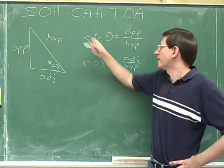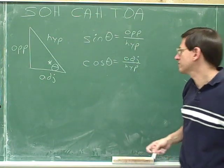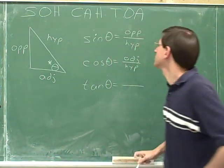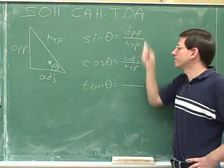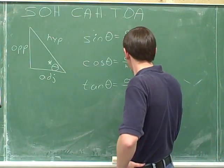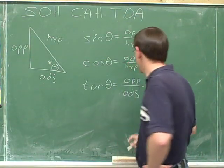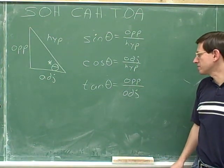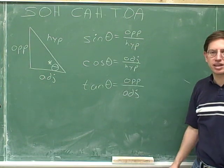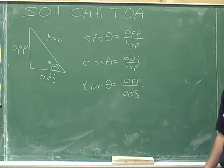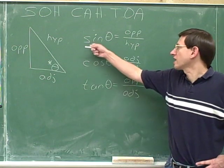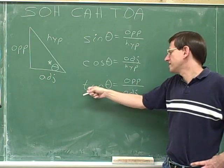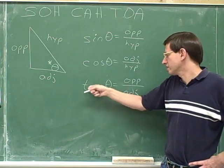Cosine is adjacent over hypotenuse. And the tangent is the opposite side over the adjacent side. I'm using ADJ as an abbreviation for adjacent, OPP as an abbreviation for opposite, and HYP as an abbreviation for hypotenuse. Sine is opposite over hypotenuse — SOH. Cosine is adjacent over hypotenuse — CAH. And tangent is opposite over adjacent — TOA.